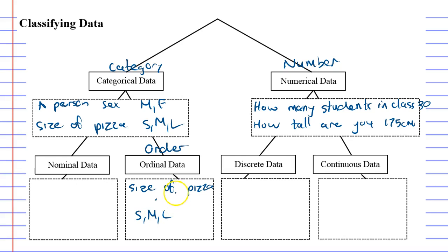This applies to the size of clothes you buy. Small, medium, large, extra large and so on. Anything that has an order to it must be ordinal data.